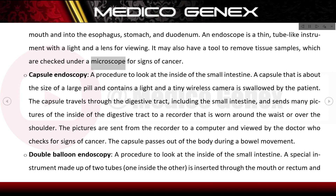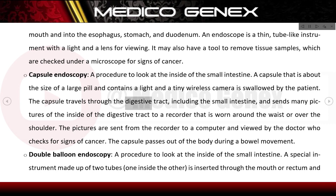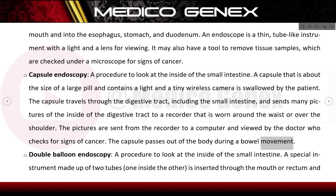Capsule endoscopy is a procedure to look at the inside of the small intestine. A capsule about the size of a large pill, containing a light and tiny wireless camera, is swallowed by the patient. It travels through the digestive tract including the small intestine and sends many pictures to a recorder worn around the waist or over the shoulder. The pictures are sent from the recorder to a computer and viewed by the doctor who checks for signs of cancer. The capsule passes out of the body during a bowel movement.